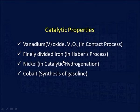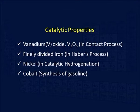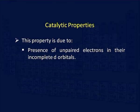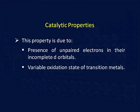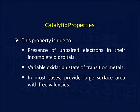So vanadium, iron, nickel, cobalt, titanium, and others are very important metal ions whose compounds are used as catalysts in various catalytic processes. This catalytic property is due to three reasons: first, the presence of unpaired electrons in their incomplete d orbitals; second, their variable oxidation state; and third, in most cases they provide a large surface area with free valences. Due to these three reasons, various transition metal ions and their compounds find uses in the field of catalysis.